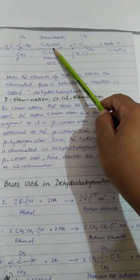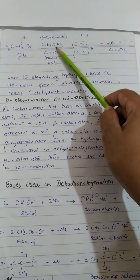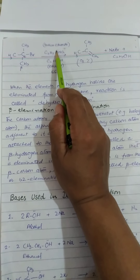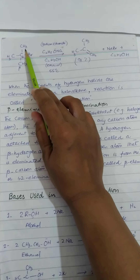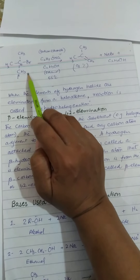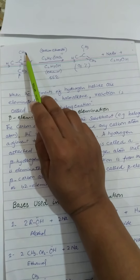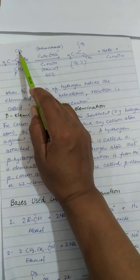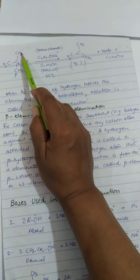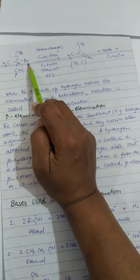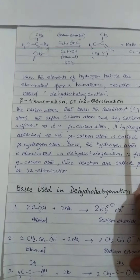یہاں پہ sodium ethoxide بطور base موجود ہے۔ Sodium پہ positive charge ہے، oxygen پہ negative charge ہے۔ یہ negative charge یہاں سے بھی proton abstract کر سکتا ہے، یہاں سے بھی، اور یہاں سے بھی، کیونکہ اس میں یہ تینوں beta hydrogen present ہیں۔ Proton abstraction کے بعد bond move کرے گا اور bromide جو ہے وہ good leaving group کے طور پر eliminate ہو جائے گا۔